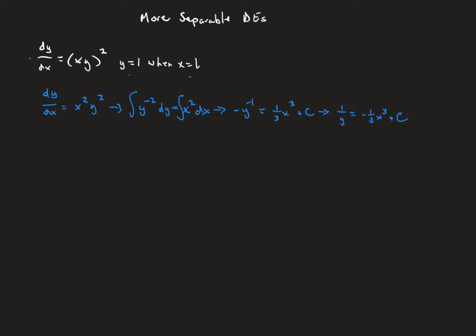You could find the initial condition and use it now, but I'm going to go one more step and take the reciprocal of both sides. You have to be a little careful here. On the left side, the reciprocal of 1 over y is y. On the right side, you cannot do this independently or separately — so I'm going to write it as one big fraction: 1 over (negative one-third x³ plus c).